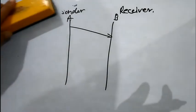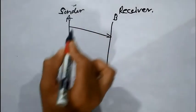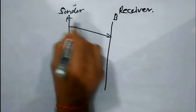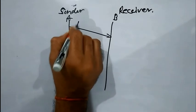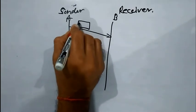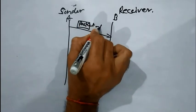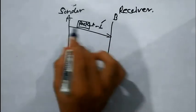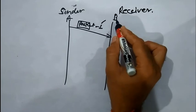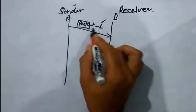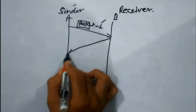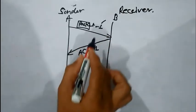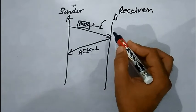Now we will see the mechanism of Stop-and-Wait protocol. Suppose the sender sends a packet — packet 1, where 1 is the unique number assigned before sending. The receiver receives packet 1 and sends back acknowledgement 1, ensuring that packet 1 was successfully received by the receiver.